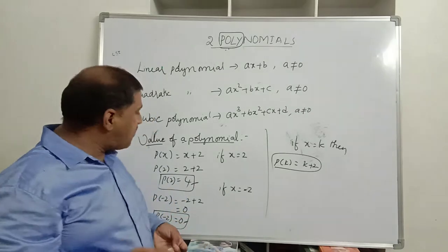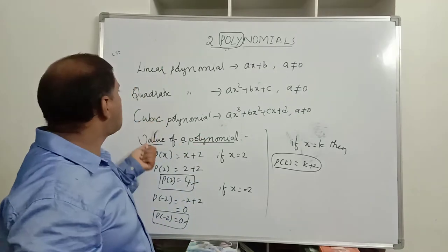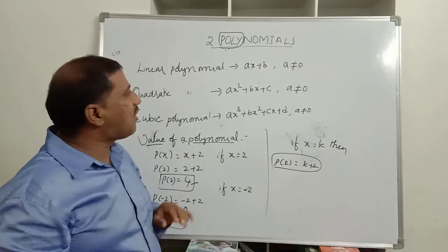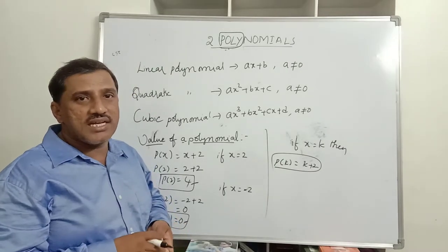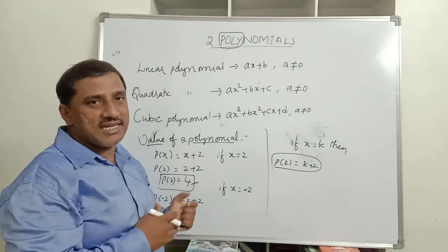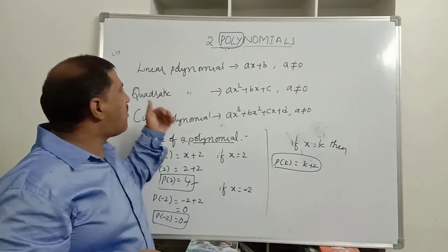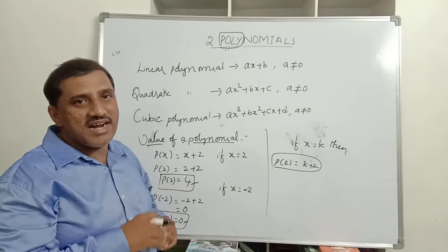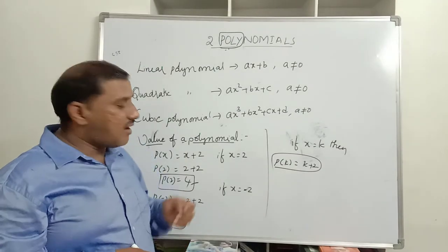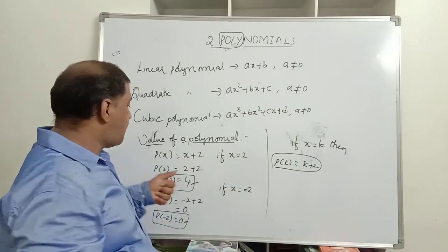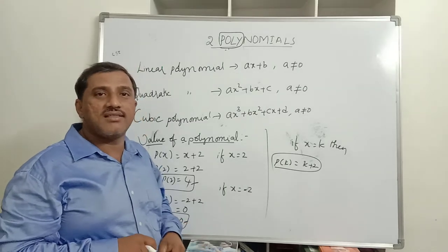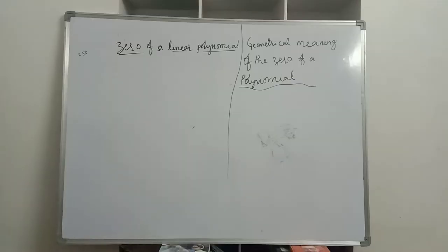Now we will discuss how many zeros a linear polynomial has, how many a quadratic polynomial has, and how many a cubic polynomial has. We will also study finding zeros of quadratic and cubic polynomials, and the division algorithm for cubic polynomials here in 10th standard.